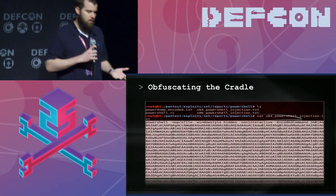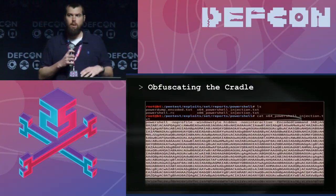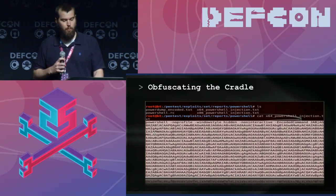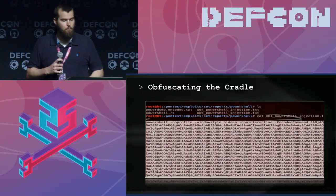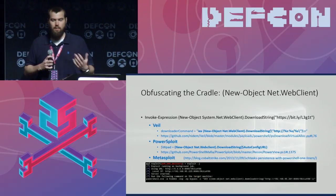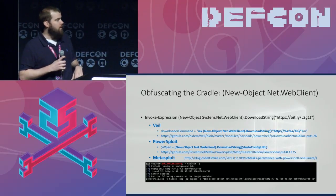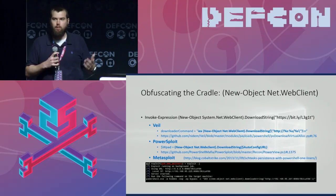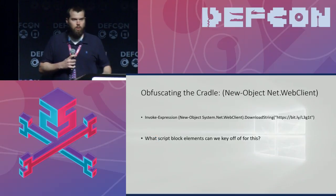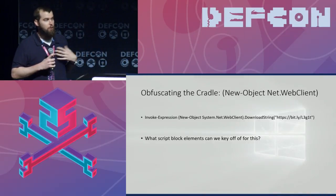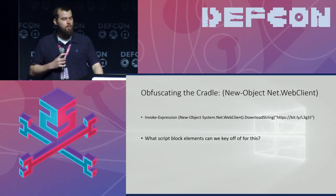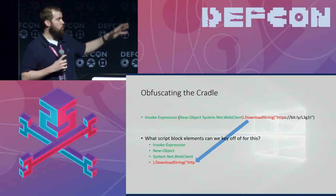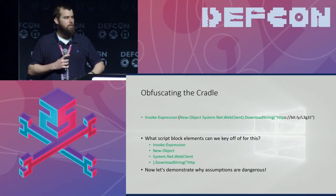Let's look at the content itself. Say you're looking at all process command lines and also PowerShell script block logging. We'll take a rapid-fire look at what we call the remote download cradle — it's copy-pasted everywhere, in all the major frameworks. It's a one-liner that remotely downloads a script into memory and passes it to Invoke-Expression (IEX), which is basically PowerShell's eval statement. As a defender, you might trigger on: invoke expression, new-object, system.net.webclient, downloadstring, HTTP. Would this catch this command? Yes — but let's go through an obfuscation exercise.